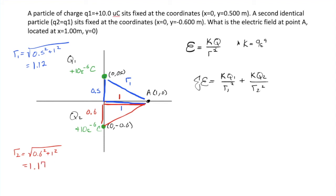At this point, we're just ready to plug in. So, 9 times 10 to the 9th times 10 times 10 to the negative 6 over 1.12. Don't forget the squared. I'm going to try and make some space and write a little bit smaller.